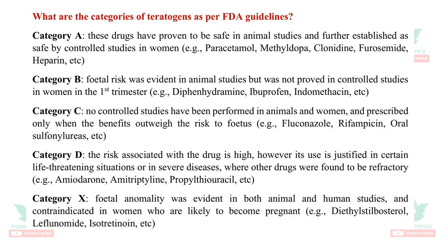The FDA categories of teratogens are five. Category A: drugs proven safe in animal studies and established as safe in women. Category B: fetal risk evident in animal studies but not proven in women in the first trimester, e.g., ibuprofen and indomethacin. Category C: no studies performed in animals and women; prescribed only when benefits outweigh risks, e.g., fluconazole and rifampicin. Category D: risk is high; however, use is justified in certain life-threatening or severe diseases where other drugs are not working, e.g., amiodarone, amitriptyline, propylthiouracil. Category X: fetal anomaly evident in both animal and human studies; contraindicated in women likely to become pregnant, e.g., diethylstilbestrol, leflunomide, isotretinoin.